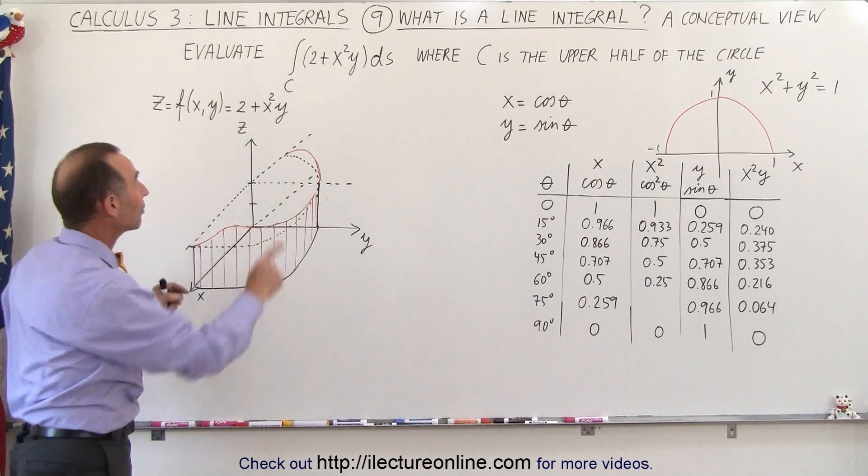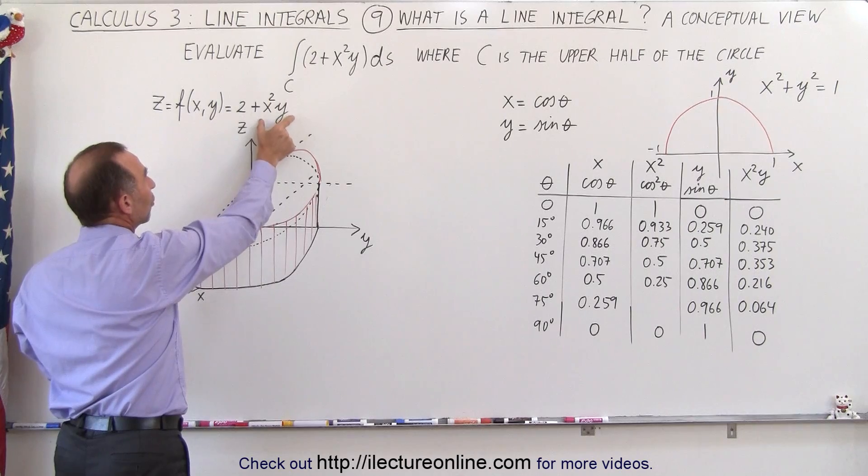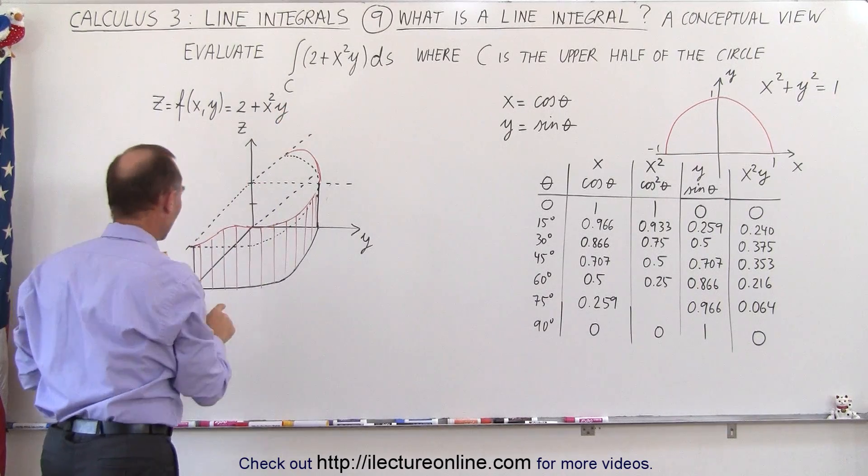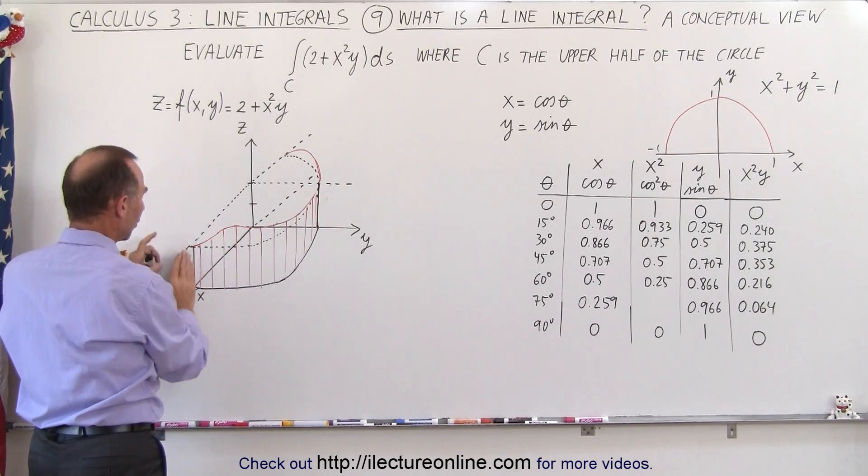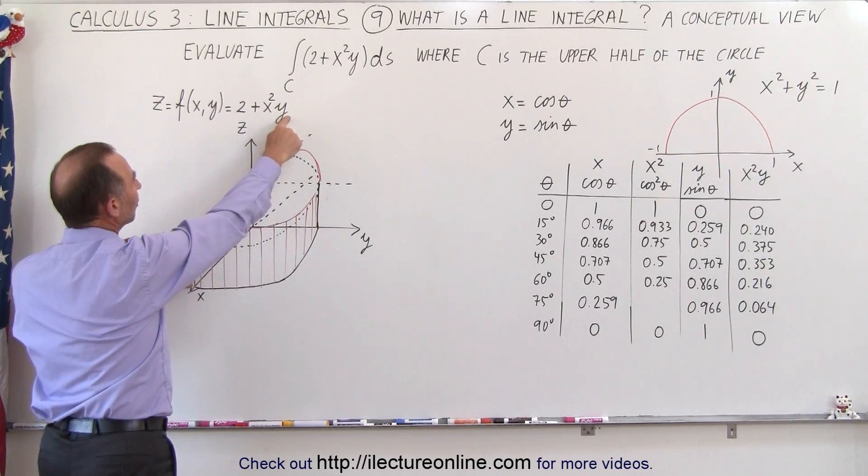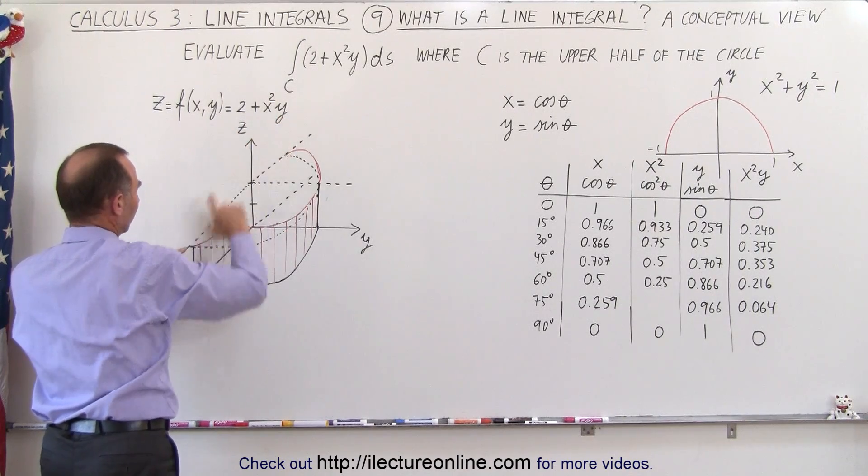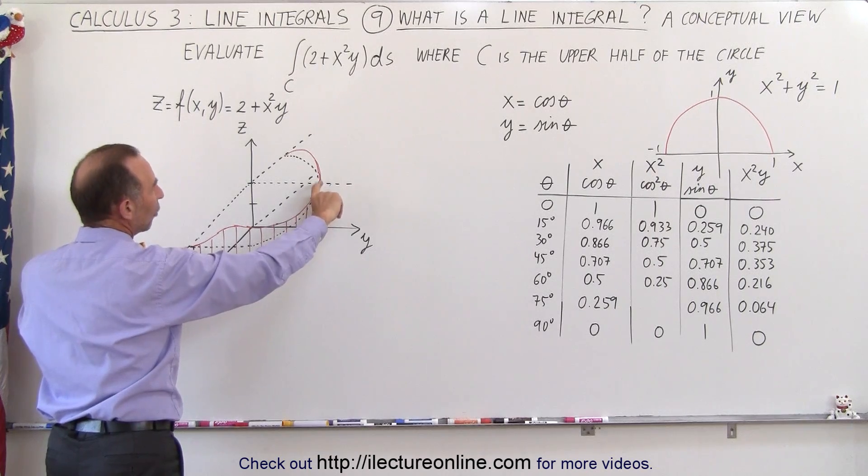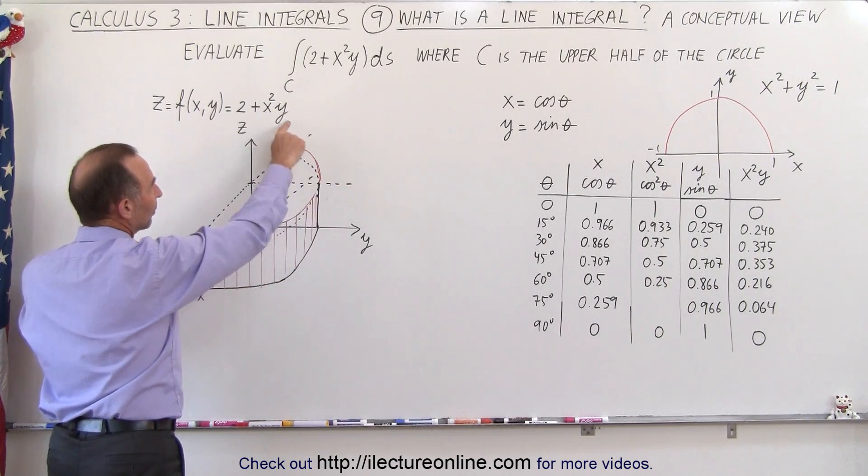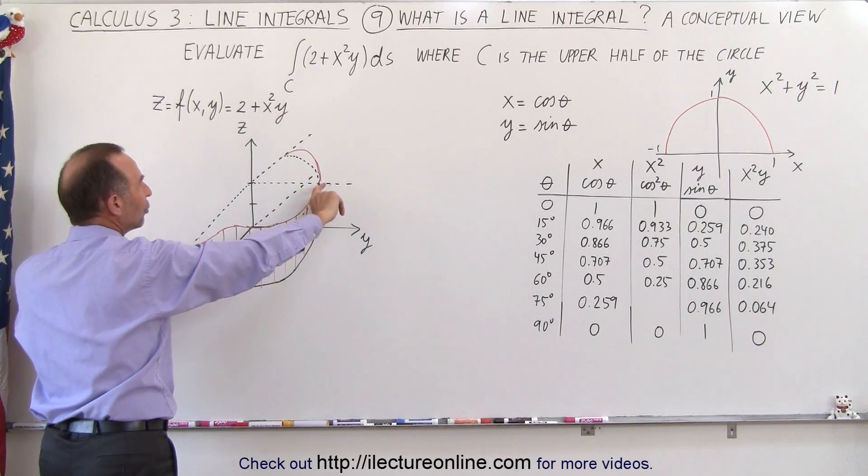But if either x or y are 0, then the additional part here is going to be equal to 0, so the height is still going to be 2. So here you can see when y is equal to 0, we plug in 0 there, the height has to be equal to 2 because x squared times 0 is always going to be 0. Over here, when x is equal to 0, that's also going to equal 0 because 0 times y is 0 and so we end up at a height of 2.